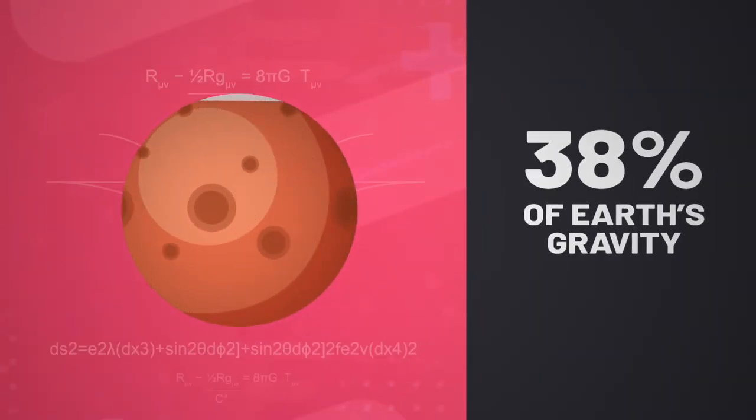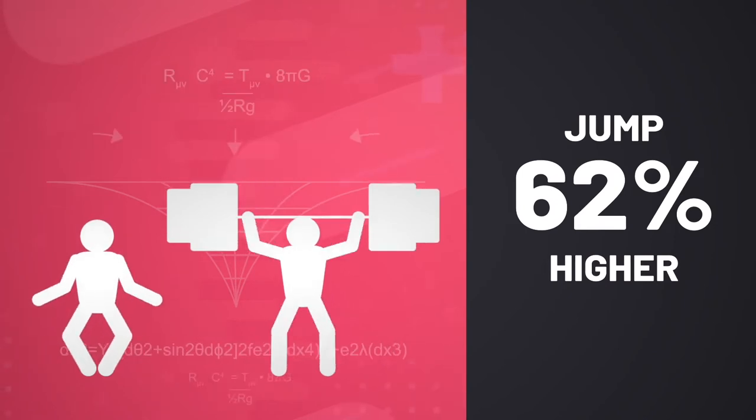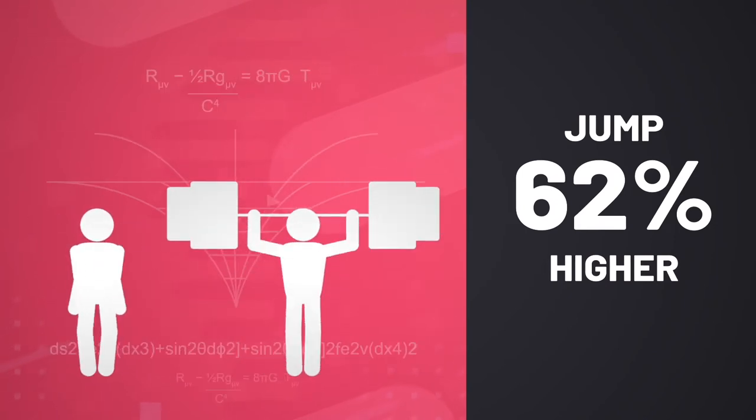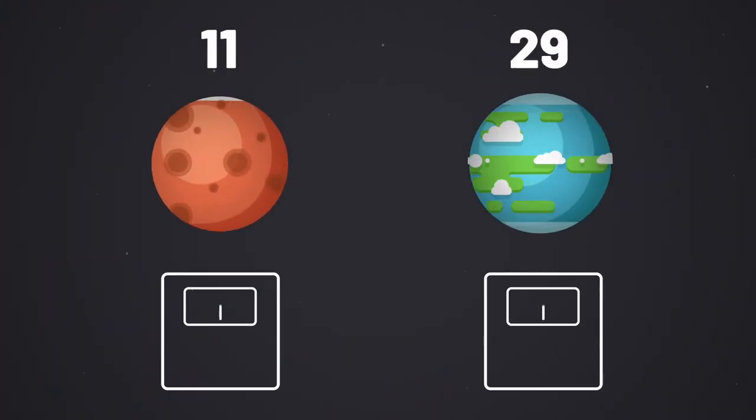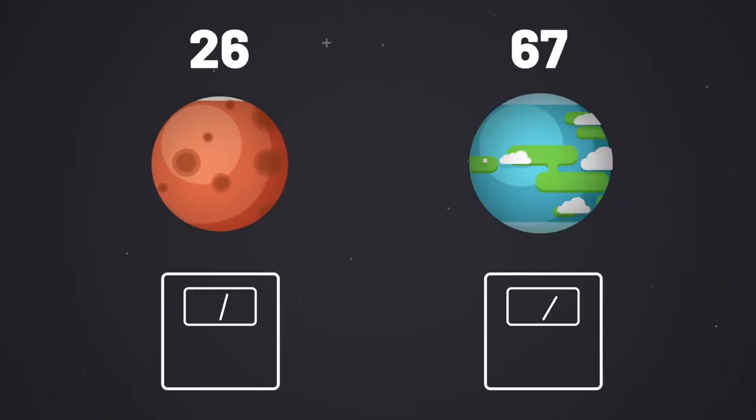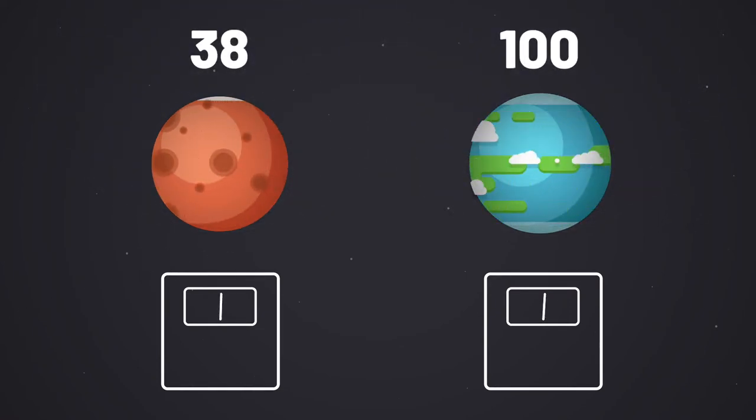Being a much less massive planet, you would only experience around 38% of Earth's gravity on Mars. So on Mars, you'd be able to jump around 62% higher and lift 62% more weight. Of course, this also means you would weigh less too. A 100-pound person on Earth would only weigh, you guessed it, 38 pounds upon arriving on Mars.